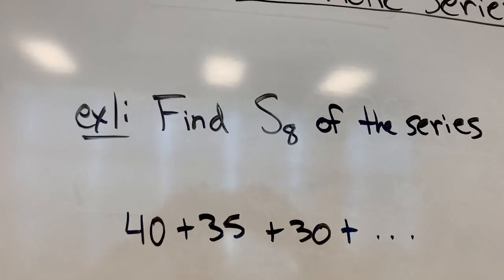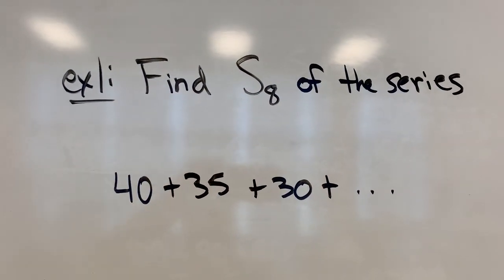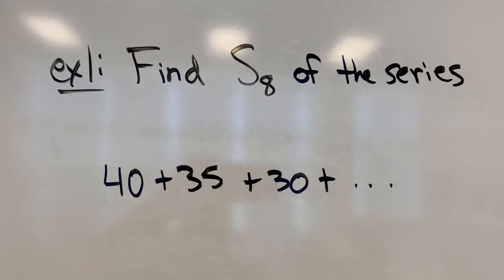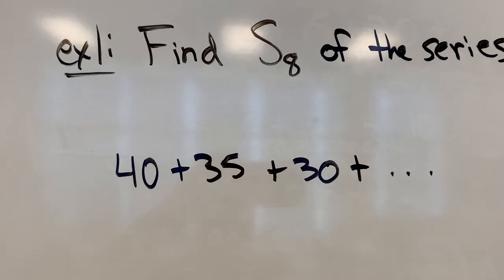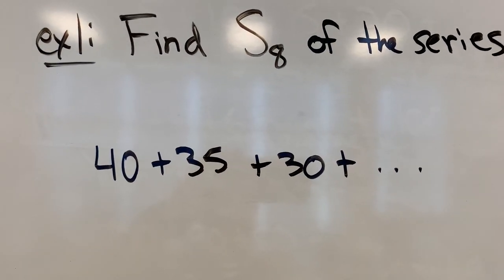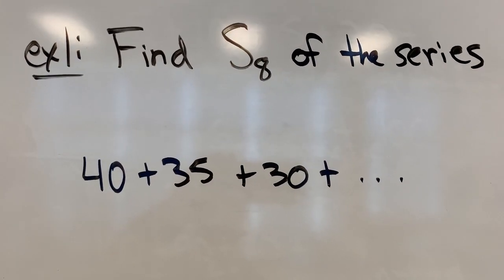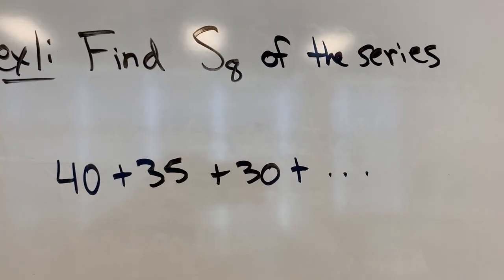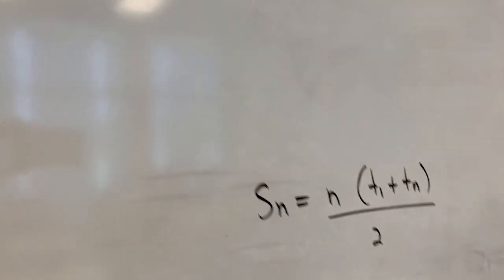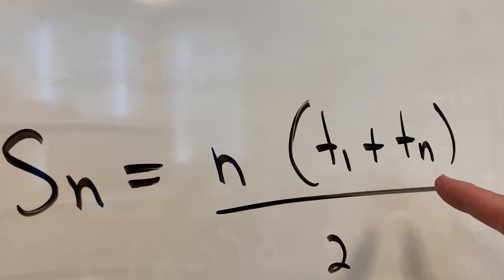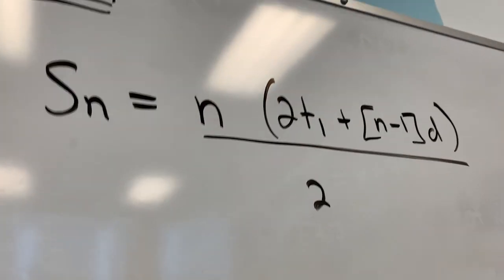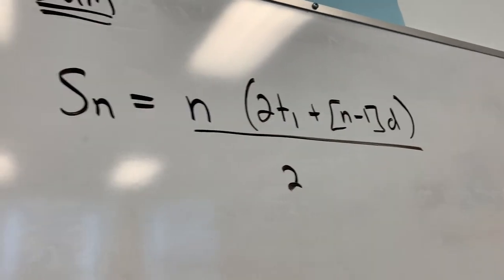If I'm asked to find S8 of this series 40 plus 35 plus 30, first I can see that it's arithmetic. Mental math tells me this thing is going down five every time, so that's a common difference of negative five. I definitely don't have the eighth term, so unless I choose to find the eighth term first, I don't have tn. So I'm going to right away use this formula right here.